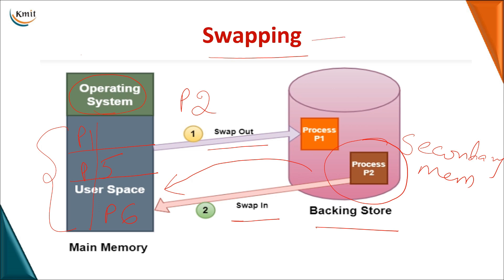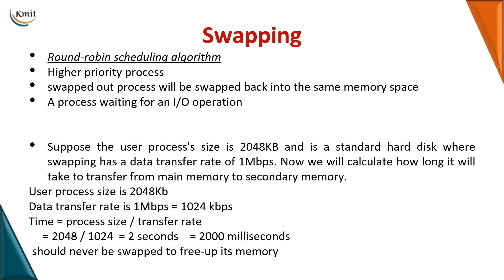We generally use swapping to increase CPU utilization. Even if P1, P5, and P6 are in memory, if P1 is waiting for I/O and none of them are ready for execution, the CPU cannot sit idle. So it selects a process, swaps it out, and brings in another process.